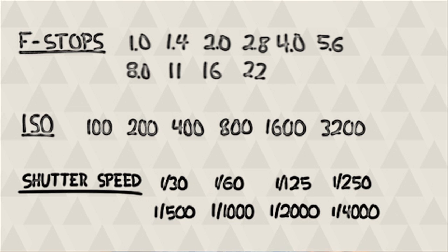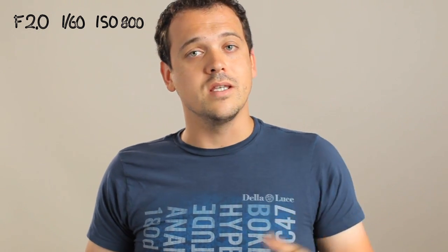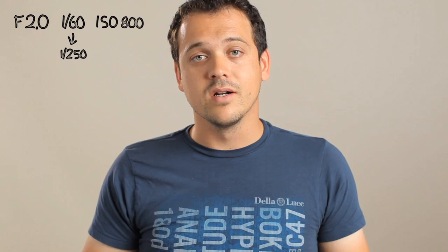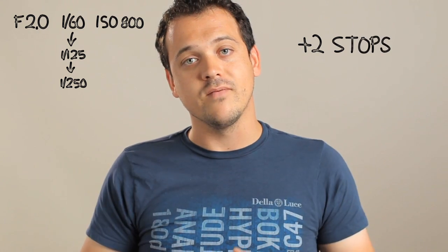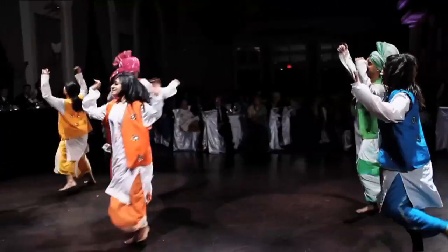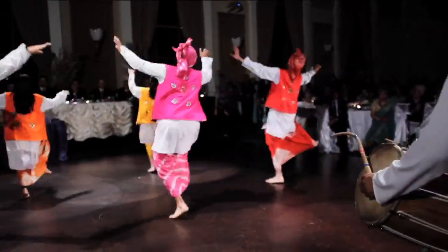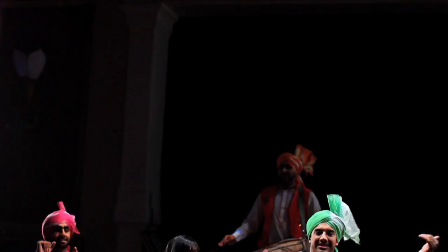We can use this understanding of stops of light — aperture, shutter speed, and ISO — to make effective decisions when shooting in the field. Take the example of shooting in a dimly lit situation and we're shooting dancing footage. We're shooting at f2, 1/60th of a second, and ISO 800. We've decided we want a high shutter to really accentuate the motion of the dancing — going from 1/60th to 1/250th. Going back to our different stops of light: 1/60, 1/125, 1/250 — so we need to add two stops of light because we're taking away two stops as we increase our shutter speed. If we just think about it for a second, we can make these decisions and we don't even have to check our exposure — we know it's going to be right.